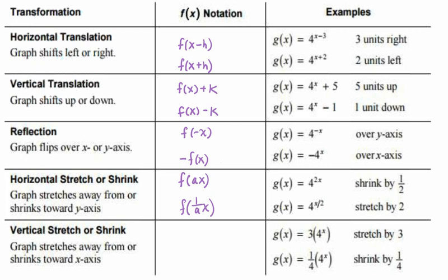And then lastly, our vertical stretch and shrink is going to look like an m times f(x) and a 1 over m times f(x). And there, we see that the stretch and the shrink, again, it depends on what the value is of the number, whether it's a stretch or a shrink. And that occurs outside of the exponent.